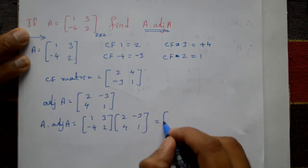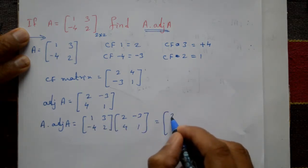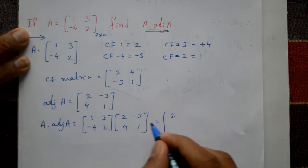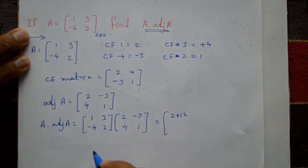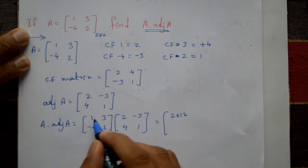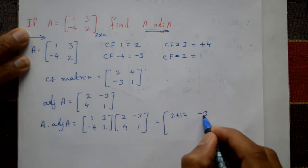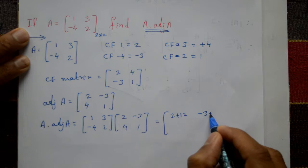First row, first column: 1×2=2 plus 3×4=12, which equals 14. First row, second column: 1×(-3)=-3 plus 3×1=3, which equals 0.